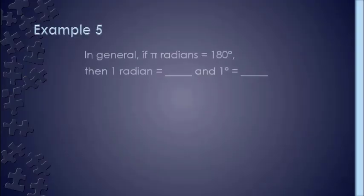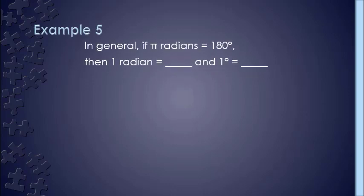So let's look at an example. In general, if we know that pi radians is equal to 180 degrees, then what is one radian equal to and what is one degree equal to?